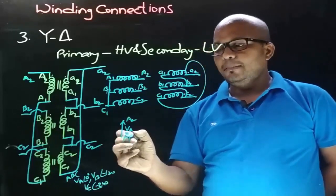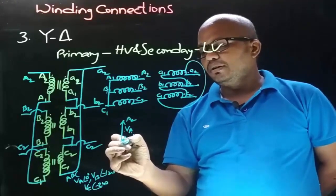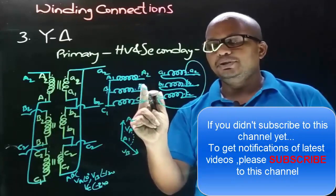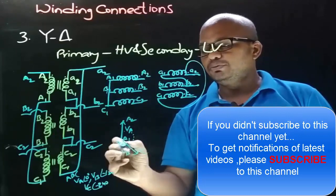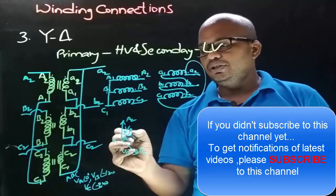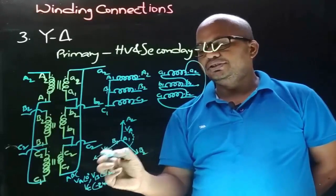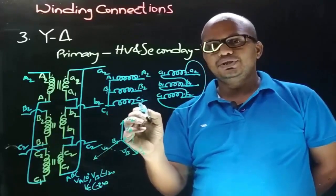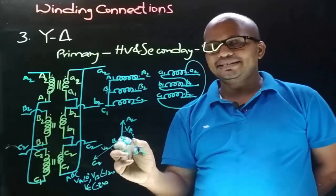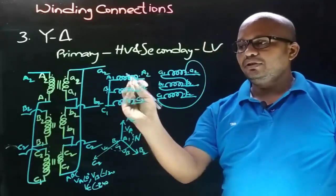VB will be at -120° from VA, so in the clockwise direction at -120° we will have VB. The terminals of VB phasor are B1 and B2, and as B2 is the connection taken from, the arrow points towards B2 and the other end is B1. At -240° from VA, draw VC phasor. The terminals of VC are C1 and C2; as C2 is the connection taken from, the arrow points towards C2 and the other end is C1. Capital A1, B1, and C1 form the common neutral terminal, represented as capital N. We obtain the phasor diagram for primary winding connections.